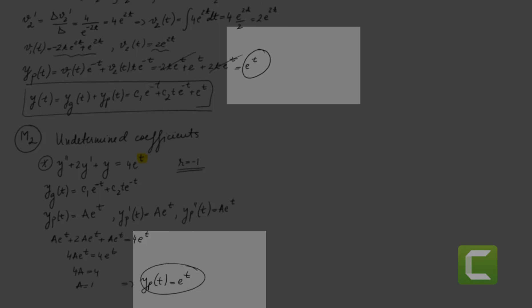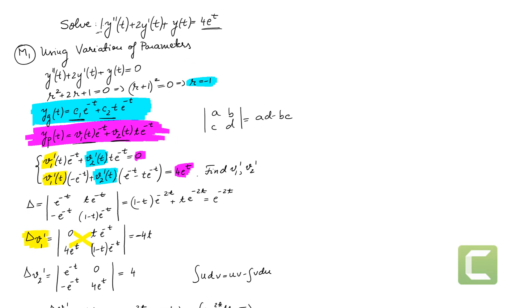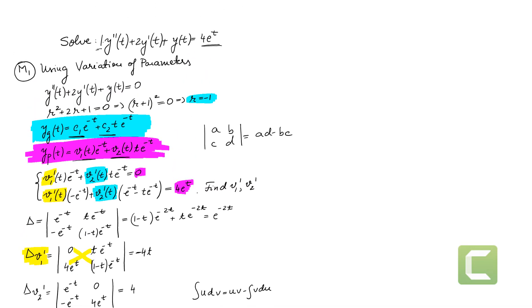You might wonder why we did all the work for variation of parameters when undetermined coefficients is so much easier here. The reason is that not all right-hand side functions are as simple as 4e^t — sometimes they can be tangents, negative exponents, or other functions where we don't know what the particular solution looks like. It's important to understand variation of parameters for those more complicated cases.